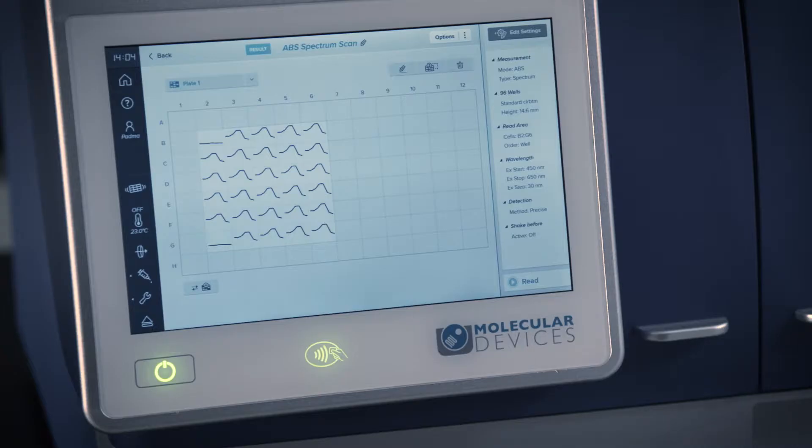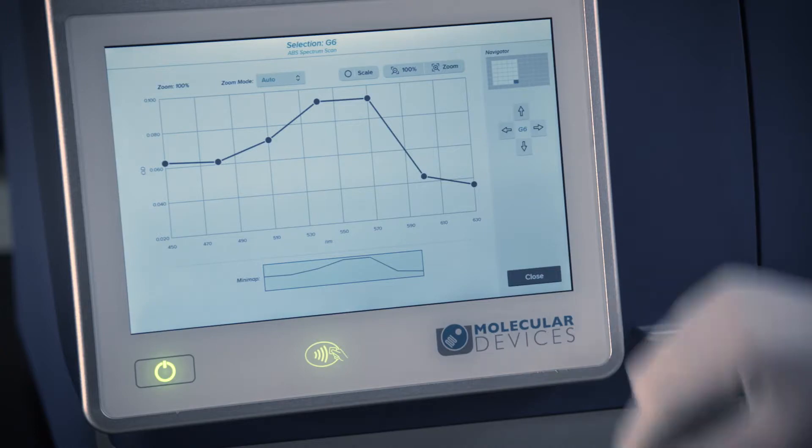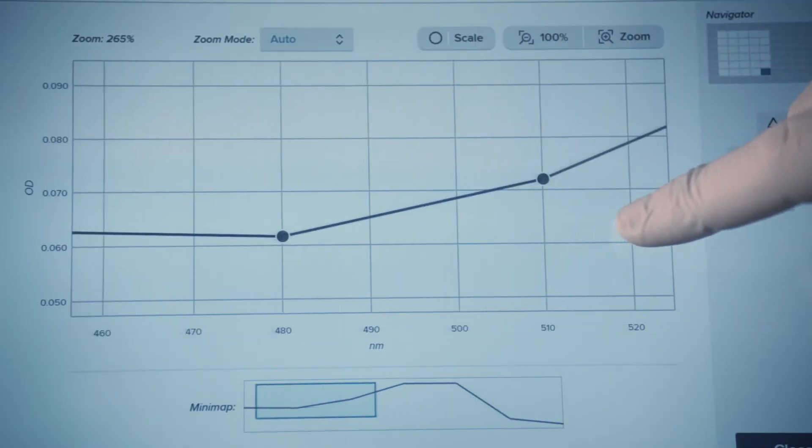When viewing kinetic or spectrum scan data, the output is a graph. Touch a single well to view the well's graph. Pinch the screen to zoom in or zoom out, and swipe left or right as needed.